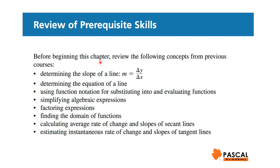Before beginning the chapter, we use some concepts from previous courses: determining the slope of a line, m equals delta y over delta x, rise over run; determining the equation of a line; using function notation for substituting into and evaluating functions; simplifying algebraic expressions; factoring expressions; finding the domain of functions; calculating average rate of change and slopes of secant lines; estimating instantaneous rate of change and slopes of tangent lines.